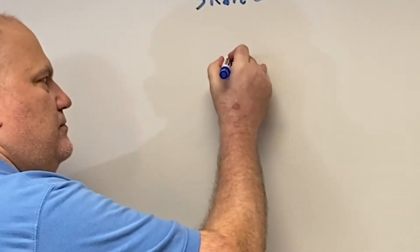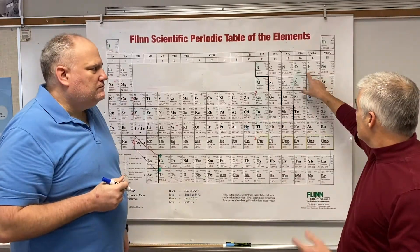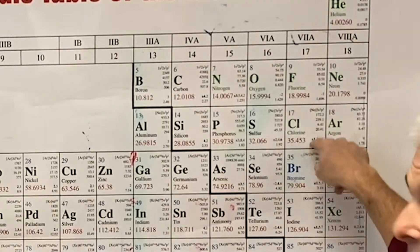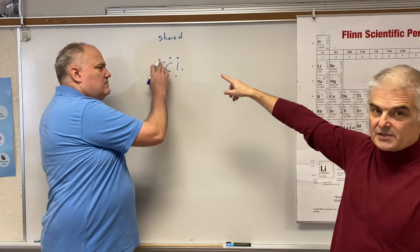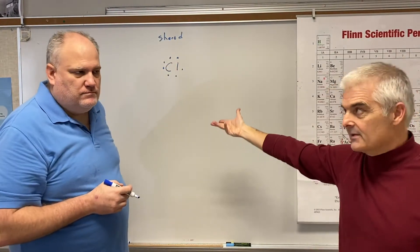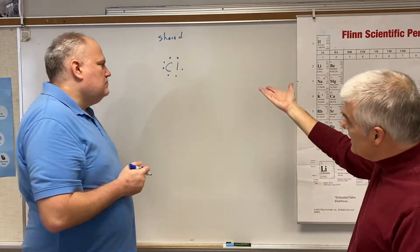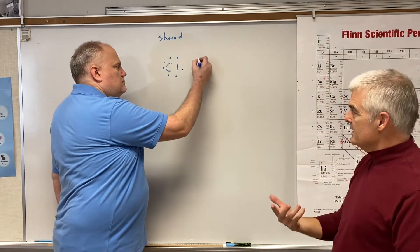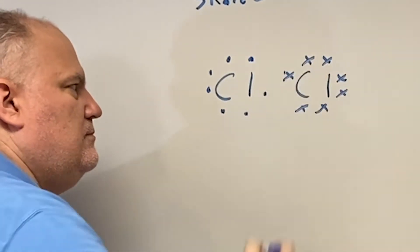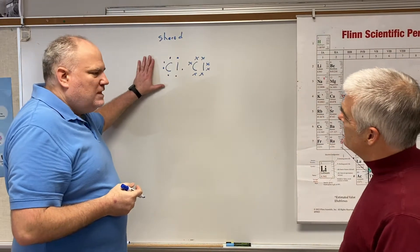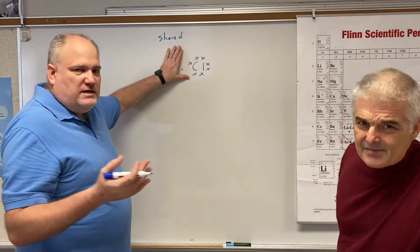Let's do chlorine. Chlorine has seven valence electrons — it's in column 17. Here are seven dots representing the seven valence electrons. Chlorine by itself is never just Cl; it connects with another chlorine. The X's represent the electrons from the second chlorine. Now, these two atoms — are either of them happy with seven? No, they need eight.